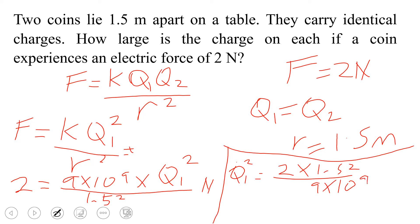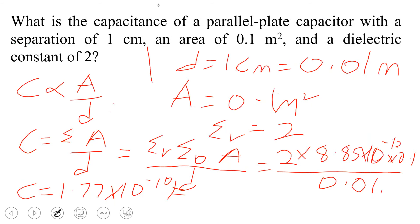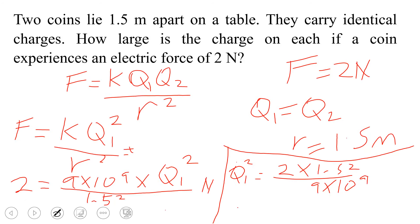When you simplify and find the square root of both sides, you get Q1 equal to 2.24 × 10⁻⁵ coulombs. We will stop here for now, and in the next video I will be revising some questions that have to do with electric circuits. See you later, bye.